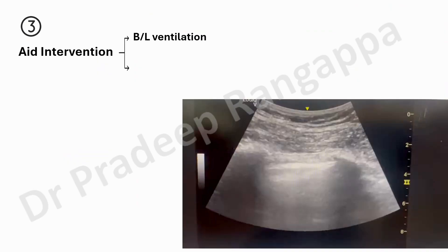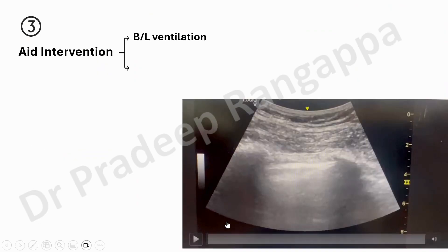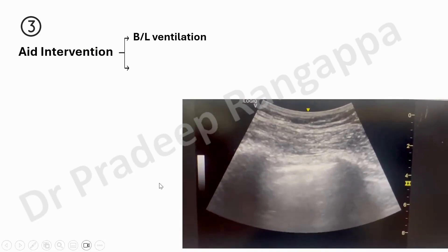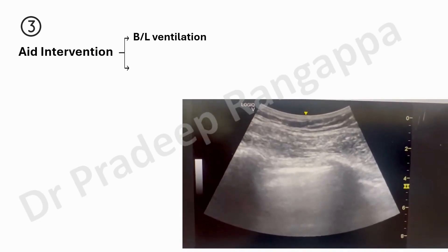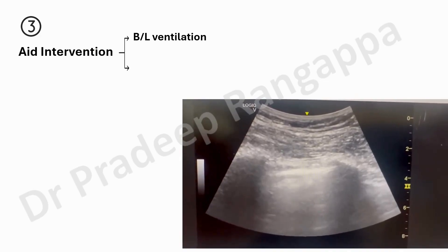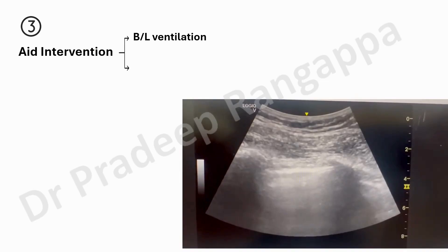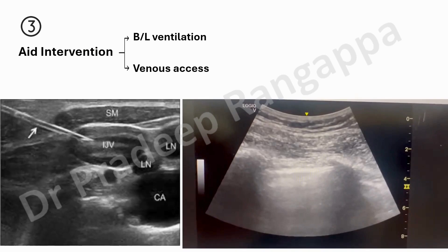Step 3, which is most crucial, is to look for urgent interventions. First, look for lung sliding sign — whether there is lung sliding or no lung sliding. If there is no lung sliding, immediate intervention is needed, such as inserting an underwater seal drain or correcting pneumothorax by needle thoracostomy. The third step also allows you to use ultrasound to guide vascular access — if there is no IV access, you can utilize this step to perform venous cannulation.